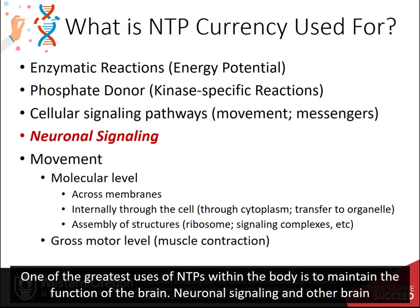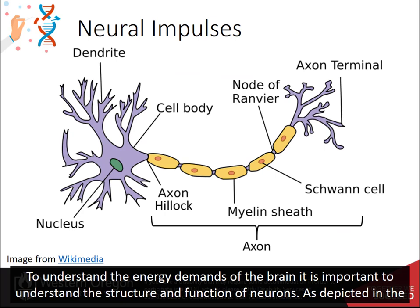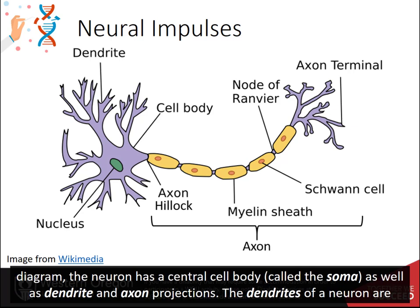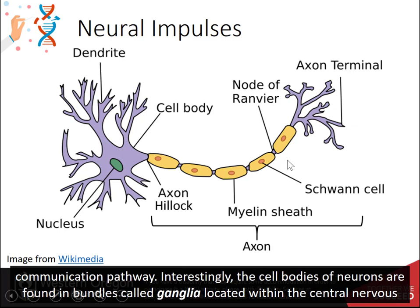One of the greatest uses of NTPs within the body is to maintain the function of the brain. Neuronal signaling and other brain functions use roughly 20% of the body's energy resources. To understand the energy demands of the brain, it is important to understand the structure and function of neurons. As depicted in the diagram, the neuron has a central cell body called the soma, as well as dendrite and axon projections. The dendrites of the neuron are typically where outside signals are received, and the axon is used to transmit chemical signals to downstream target cells in the communication pathway.